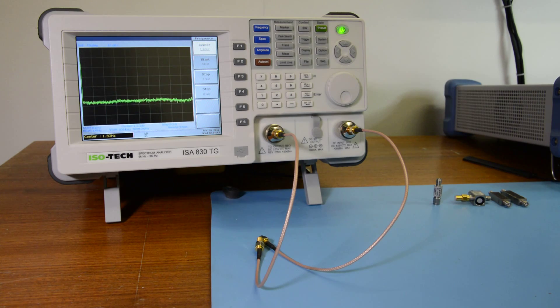So I'm just going to run through a simple demonstration of using the tracking generator feature on the ISO 830TG spectrum analyzer. As the name suggests, the tracking generator is a signal generator that tracks the frequency of the spectrum analyzer, so it's an incredibly handy feature to have that allows you to do things such as measuring the frequency response of circuits.